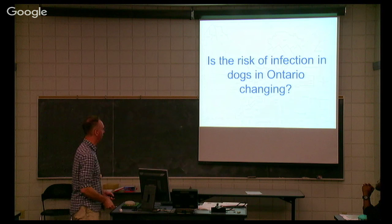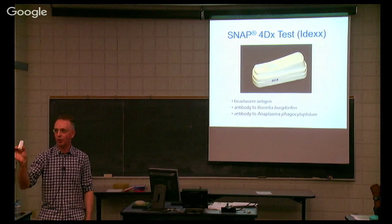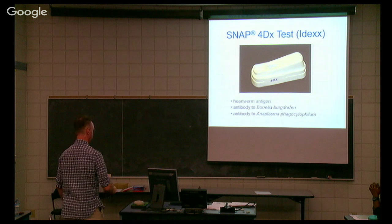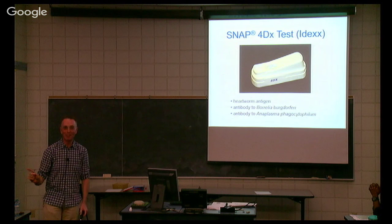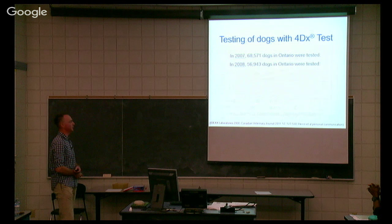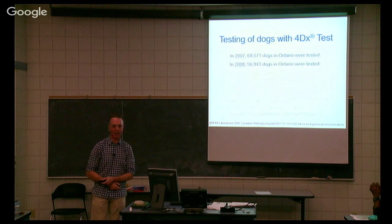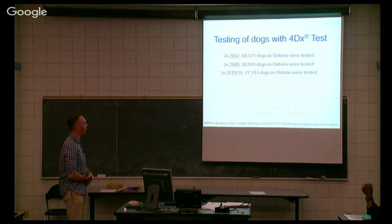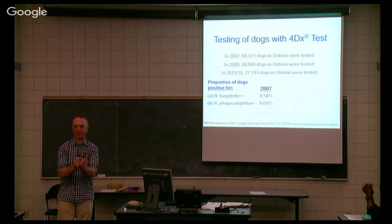What evidence is there that dogs are becoming more and more commonly exposed? Most of you who have your dog screened for heartworm every year — with this typical kit — are simultaneously screening dogs for antibody to Borrelia burgdorferi. How many dogs have been screened? In Ontario, the publicly available data is 68,500 dogs in 2007. In 2007, the proportion of dogs testing positive — that had antibody — was 0.58%. IDEX sent that data to every veterinary practice across Canada, noting that a significant percentage of dogs in Ontario had been exposed to Borrelia burgdorferi.